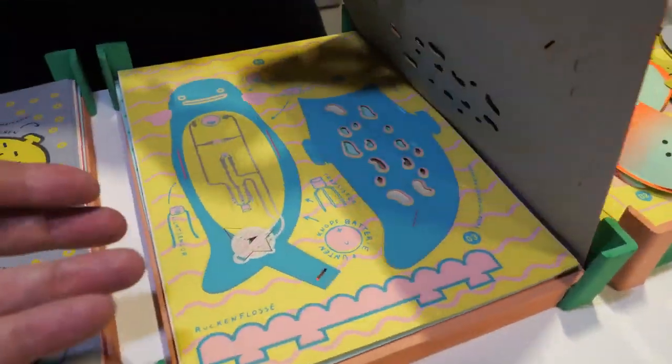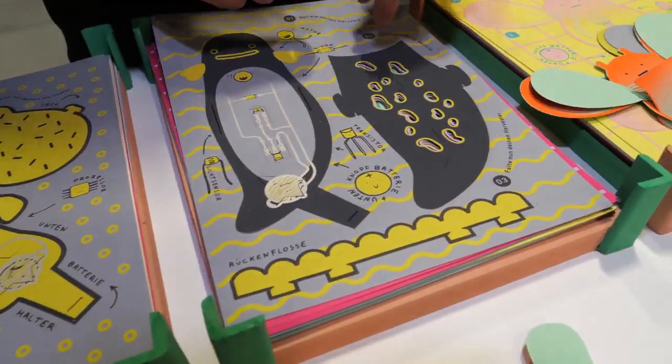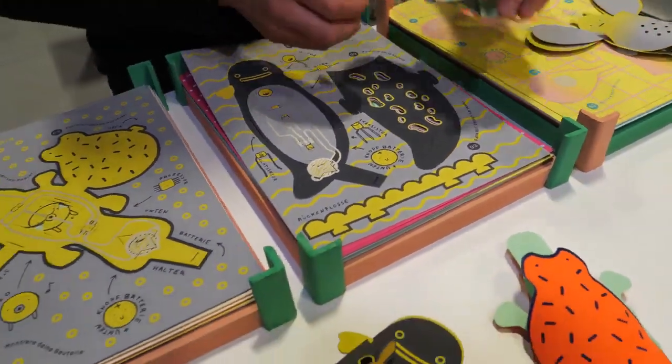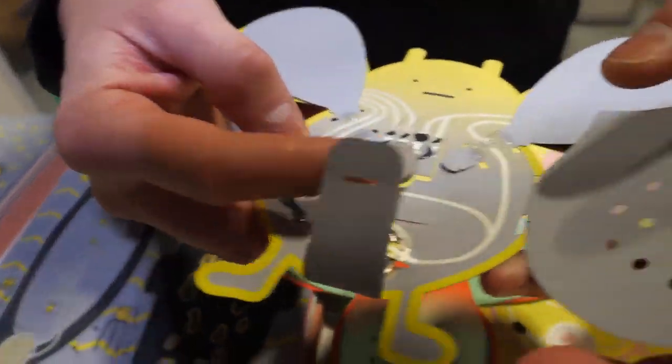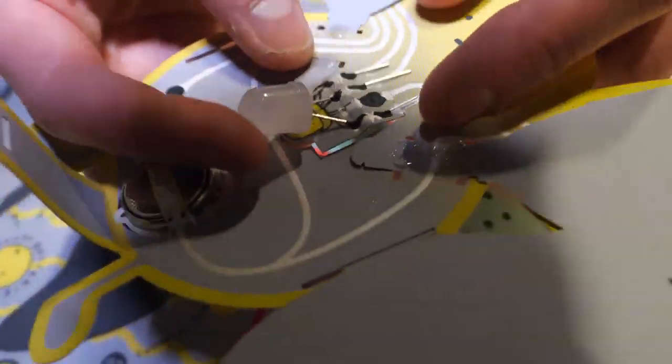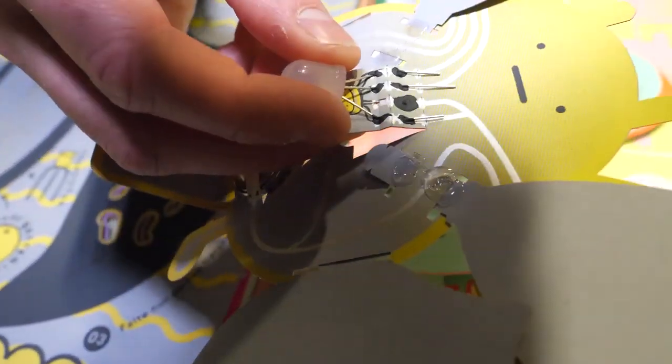Is the LED already on it or you have to add stuff? No, you have to add it by hand. How do you do? It's very simple. I mean, not a perfect example, but you're just putting them through the paper.